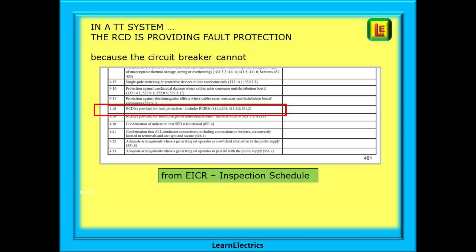Look at this extract from the wiring regulations book. This is part of the inspection schedule for an EICR. 4.18 asks the question: Are RCDs provided for fault protection? And this is the box that we should tick for TT systems with RCDs provided.